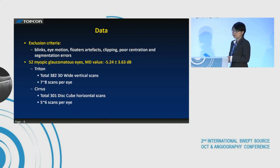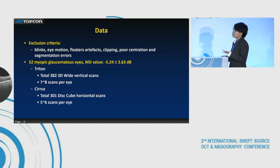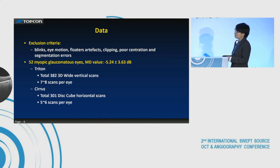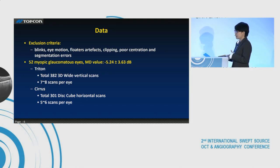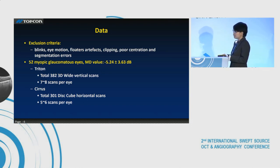This study was conducted in three clinical sites. After removal of unaccepted datasets, we have 52 eyes left, and their visual field is in a large range. For Trident, 382 wide vertical scans are left for analysis, which is seven to eight repetitions per eye. For Cirrus, there are 301 disk cube horizontal scans used for analysis, that is five to six scans per eye.